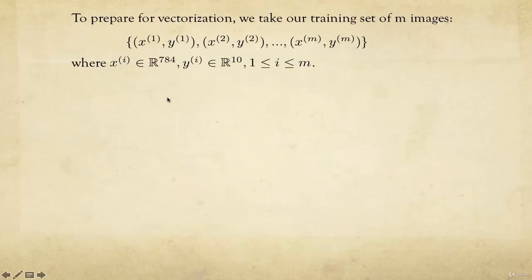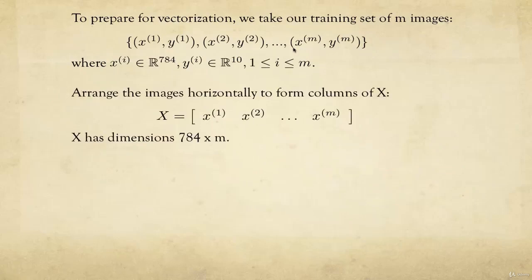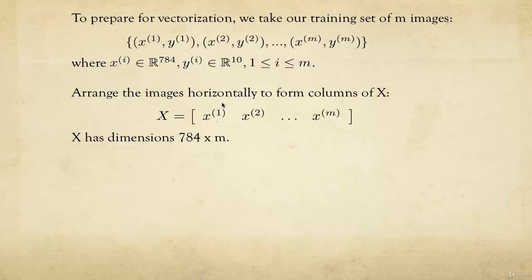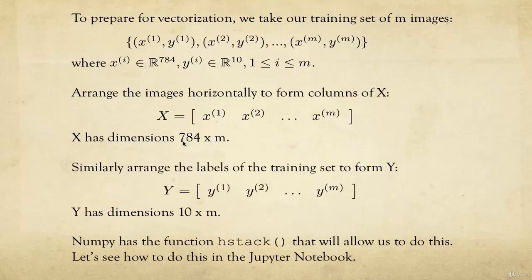To prepare for vectorization, we take all images x^1 through x^m and horizontally stack them as columns of big matrix X. This gives a 784-by-m matrix, since each image is a 784-dimensional vector and m is the number of training images. We do the same for labels, stacking y^1 through y^m to form a 10-by-m matrix Y. In NumPy, the function hstack allows us to do this, as we'll see in Jupyter Notebook.